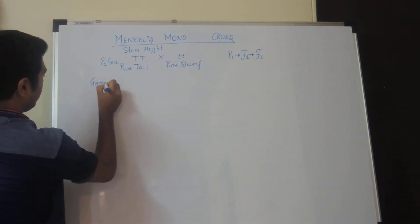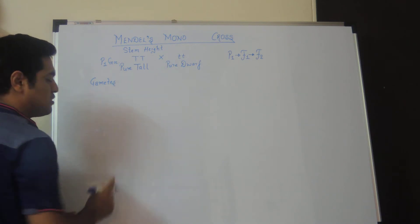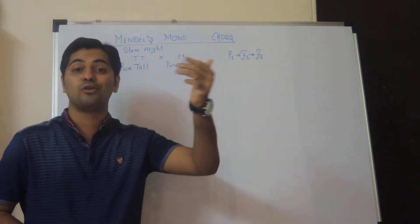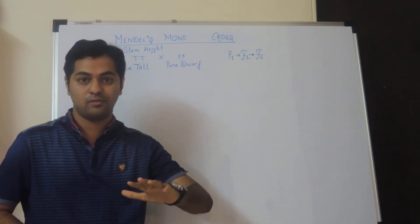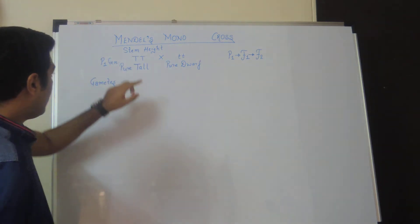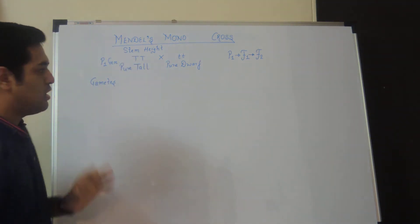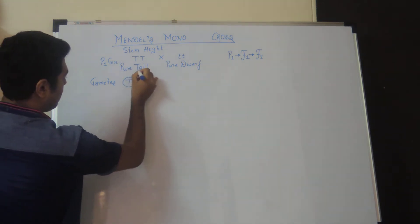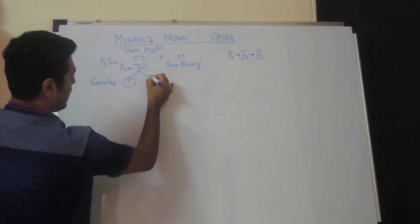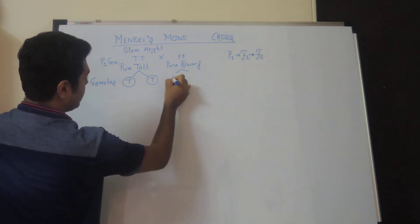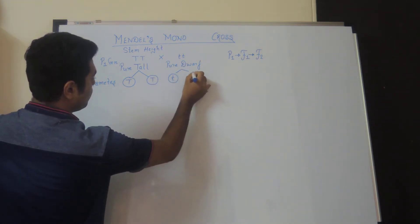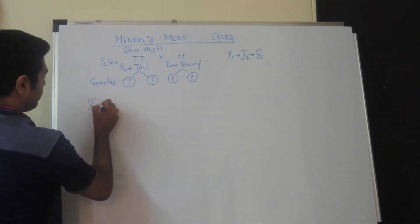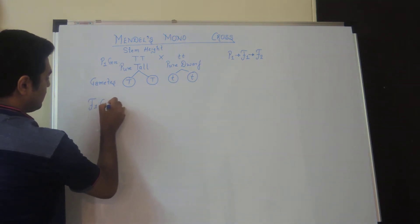In the next step, gametes are produced. During gamete formation, the cell division that occurs is meiosis. In meiosis, the diploid chromosome number is reduced to half, becoming haploid. So out of the two alleles, only one allele enters into the gamete — capital T or capital T from the tall parent, and small t or small t from the dwarf parent.